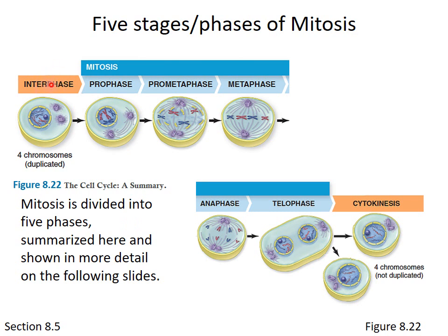Note that interphase is not one of the phases of mitosis — mitosis begins with prophase. In prophase, the chromatin condenses and becomes chromosomes. The nuclear envelope begins to break down, exposing chromosomes to the cytoplasm. In animal cells, centrosomes begin producing spindle fibers — microtubules — that extend from the poles of the cell.